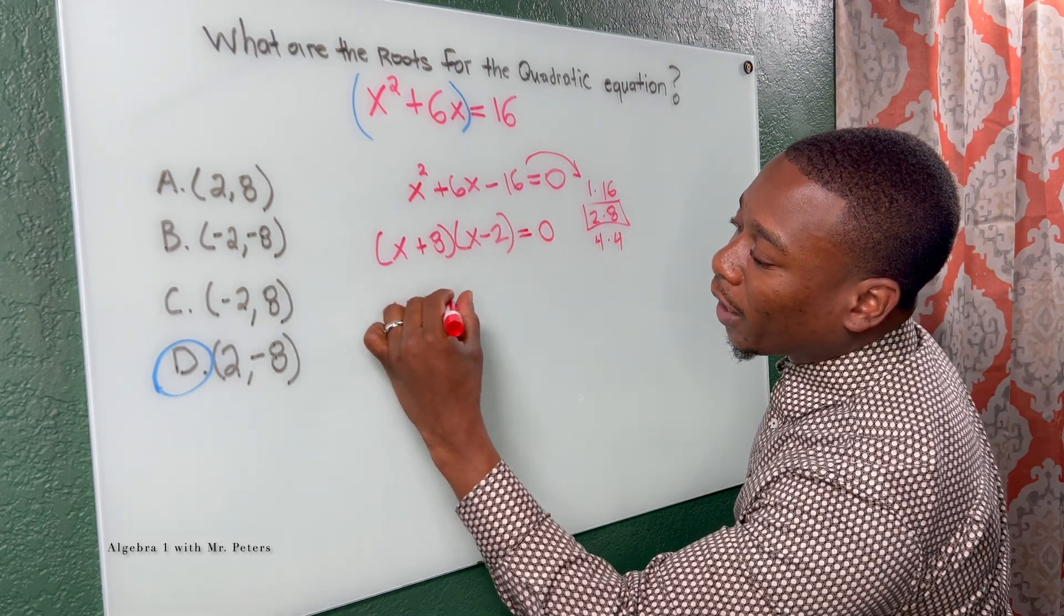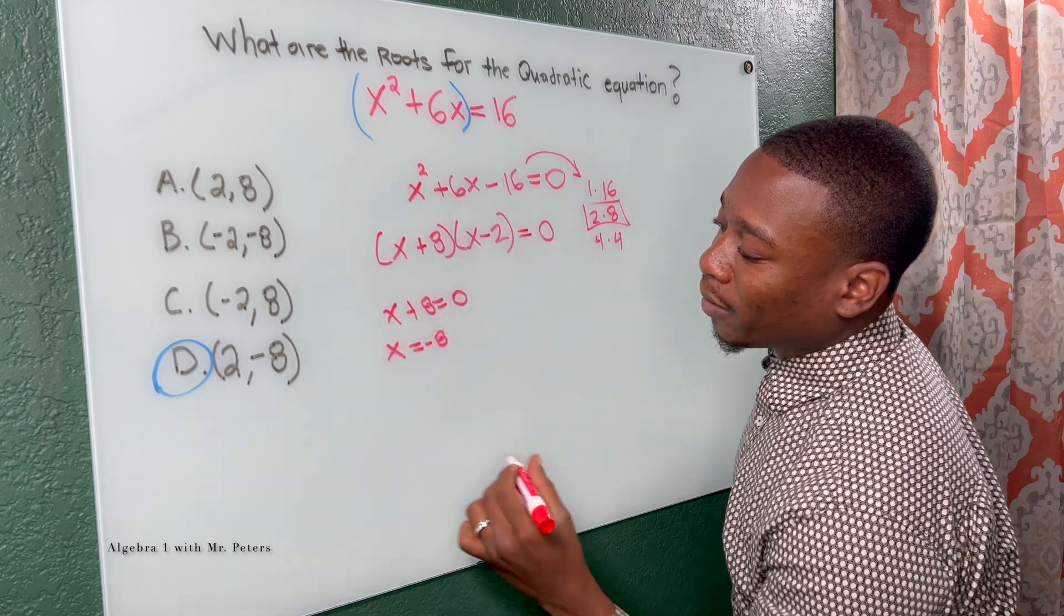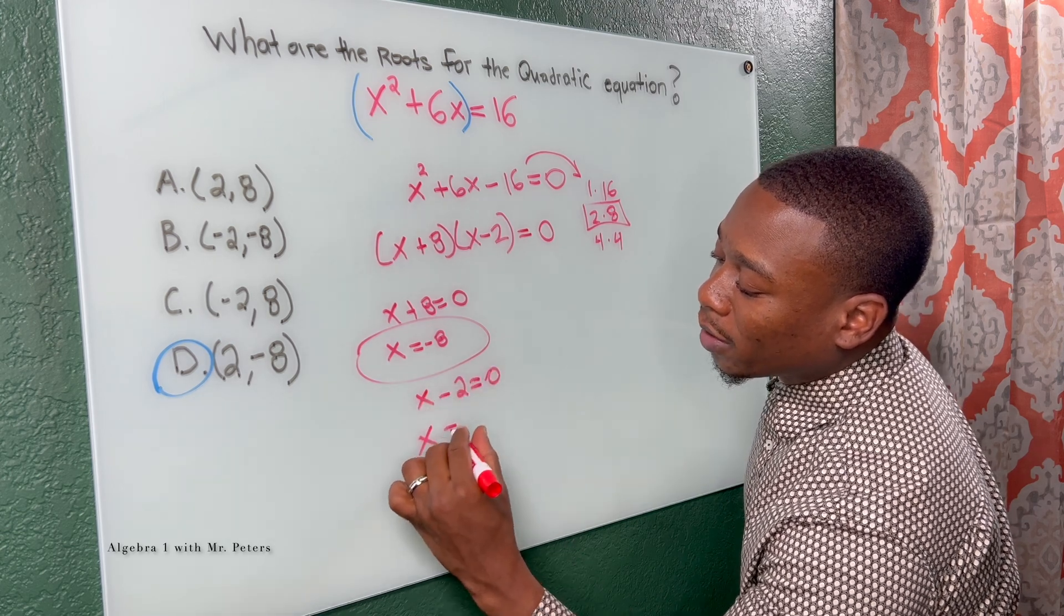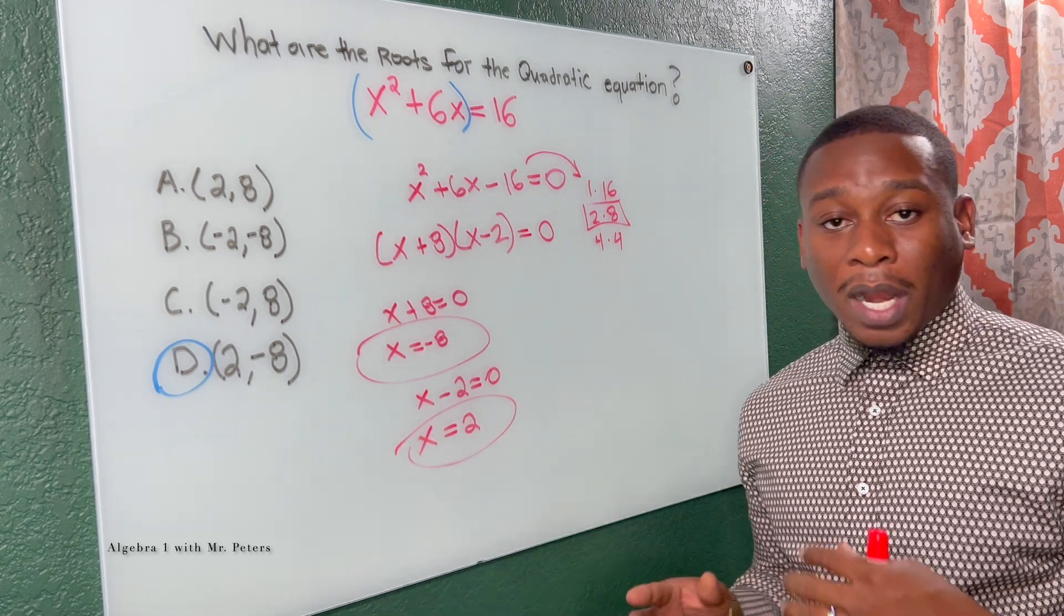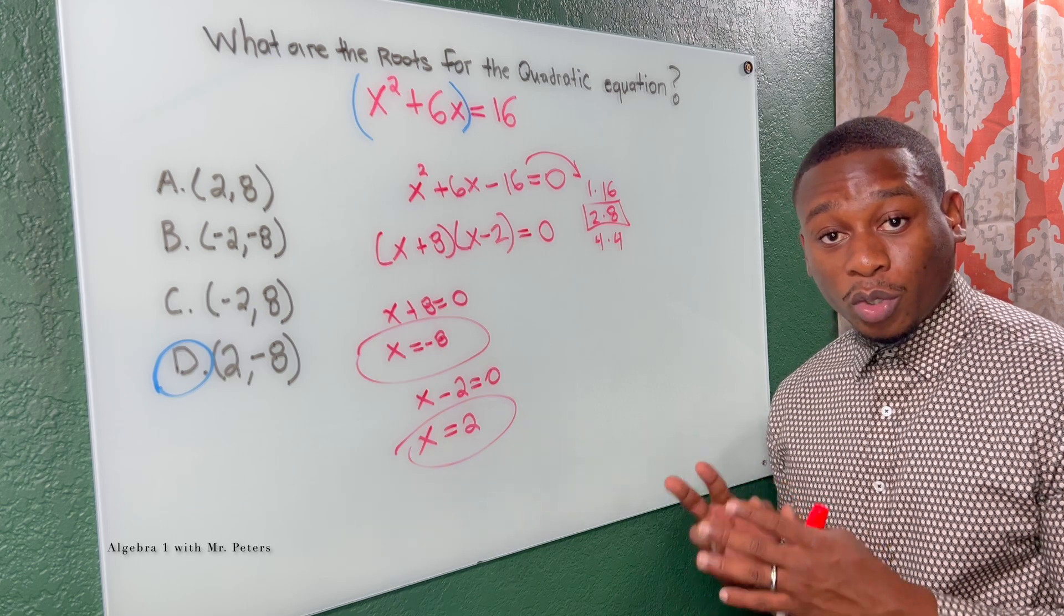So x plus eight is equal to zero, we know x is equal to negative eight. First answer. x minus two is equal to zero, we know x is equal to positive two. Second answer, same thing. So now we solved the same quadratic equation and found the roots using two methods.